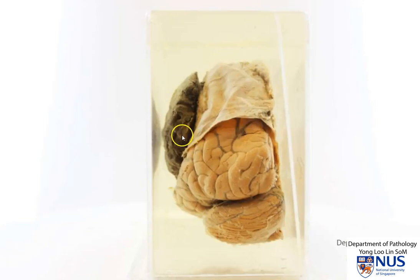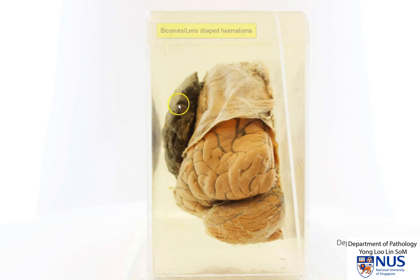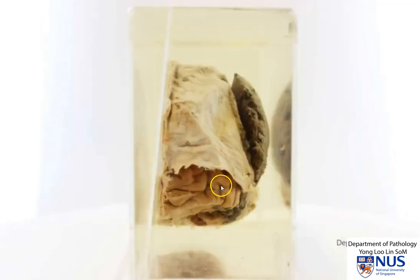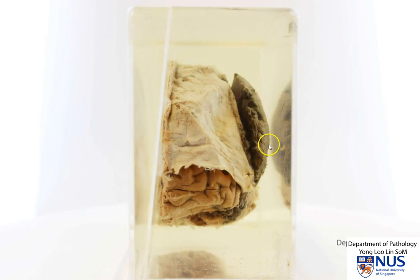If we observe this from the posterior angle, we can see that this hematoma actually forms a biconvex, almost like a lens-shaped mass. Similarly, if we look from the anterior aspect, we can also see this biconvex lens-shaped mass.